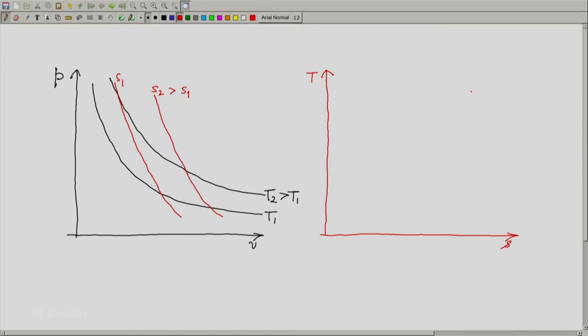The constant pressure lines are almost like exponential curves, e to the power something x that will be reminded of that function. So these are two constant pressure lines, P1, P2 greater than P1.